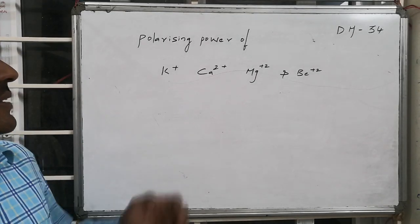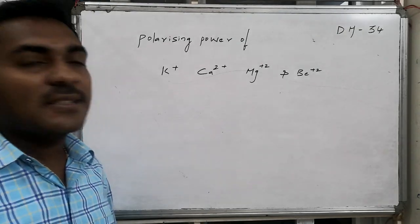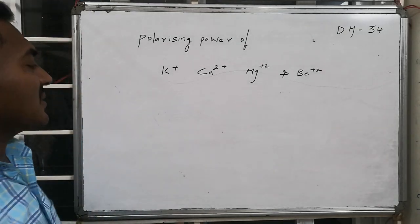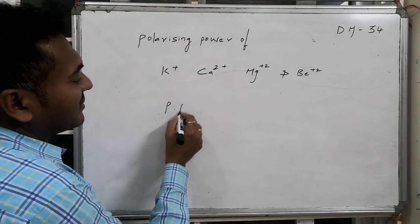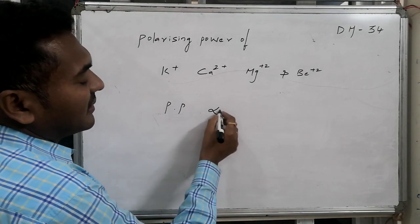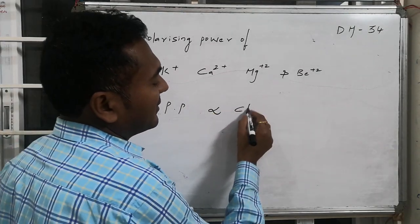The polarizing power of K+, Ca2+, Magnesium 2+, and Beryllium 2+. Polarizing power is the property of cation and it is proportional to charge present on the cation.